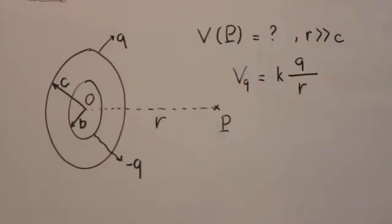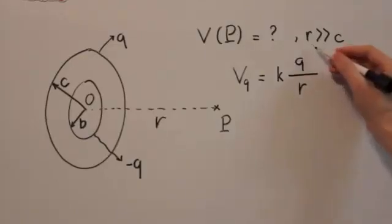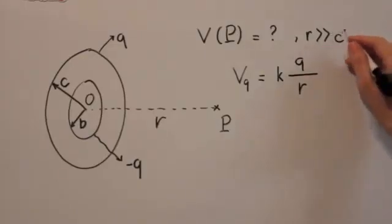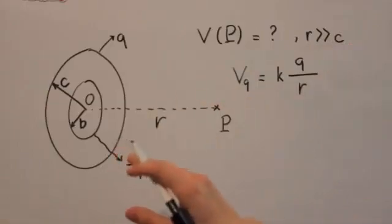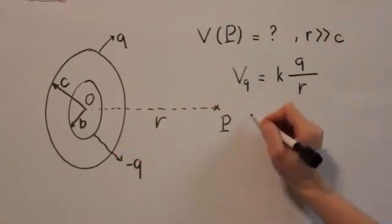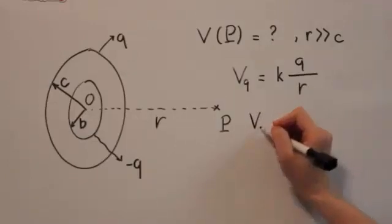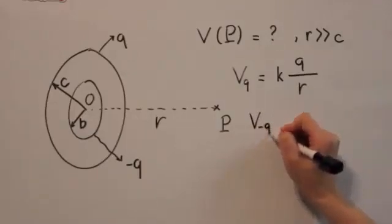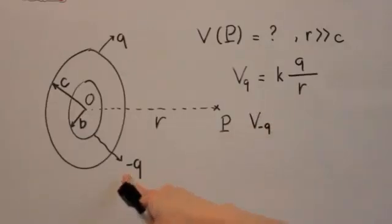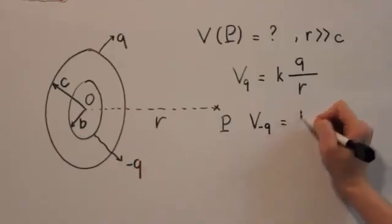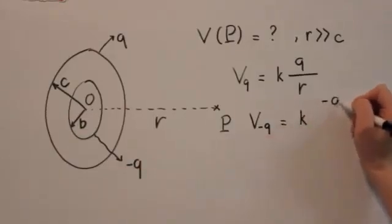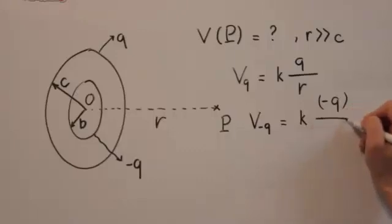In this case, we already use the approximation due to the condition where r is really large compared with the radius of the ring. And similarly, we get the electric potential due to the ring with total charge minus Q equals k minus Q over r.